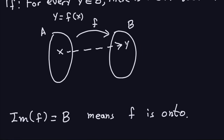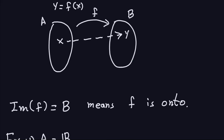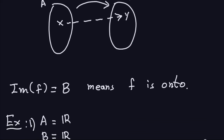Another way to say it is that the image of the function is the whole set B — there are no elements missing. When you map all the elements of A with F, those elements will cover all of B. This is what it means for F to be onto.